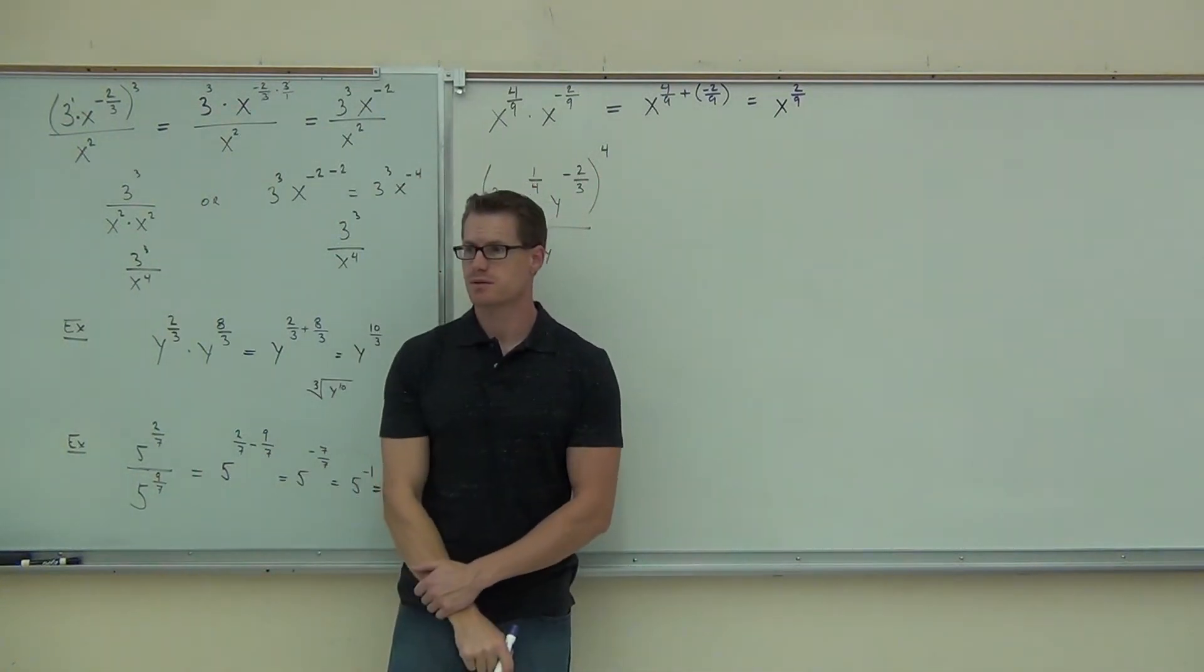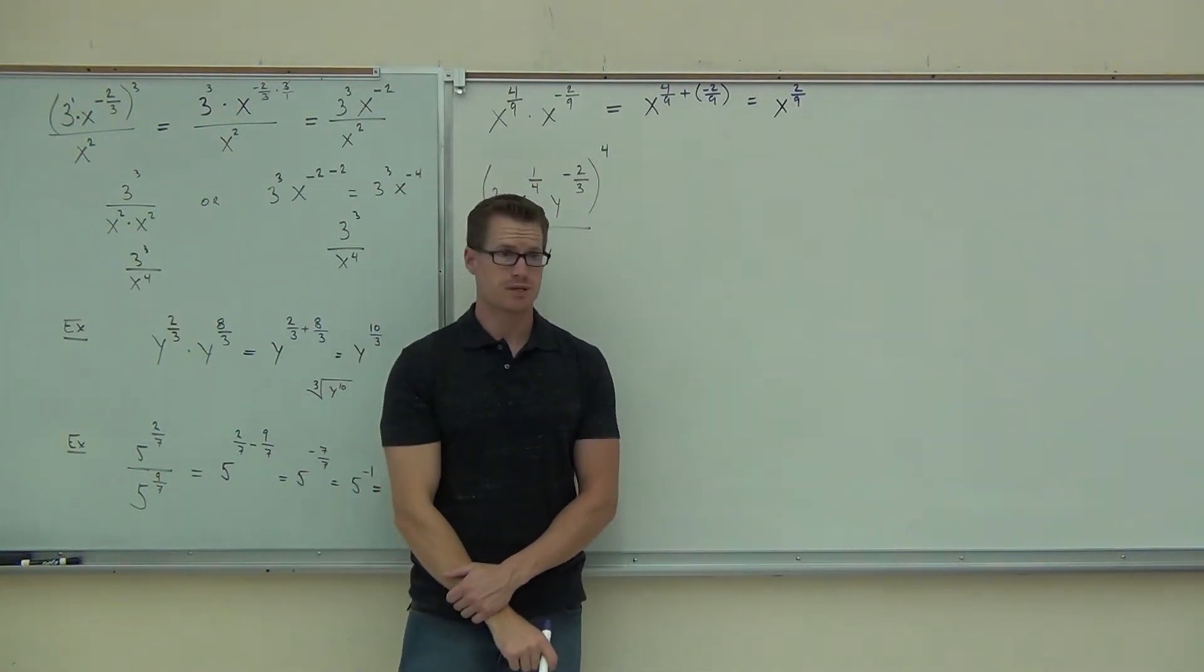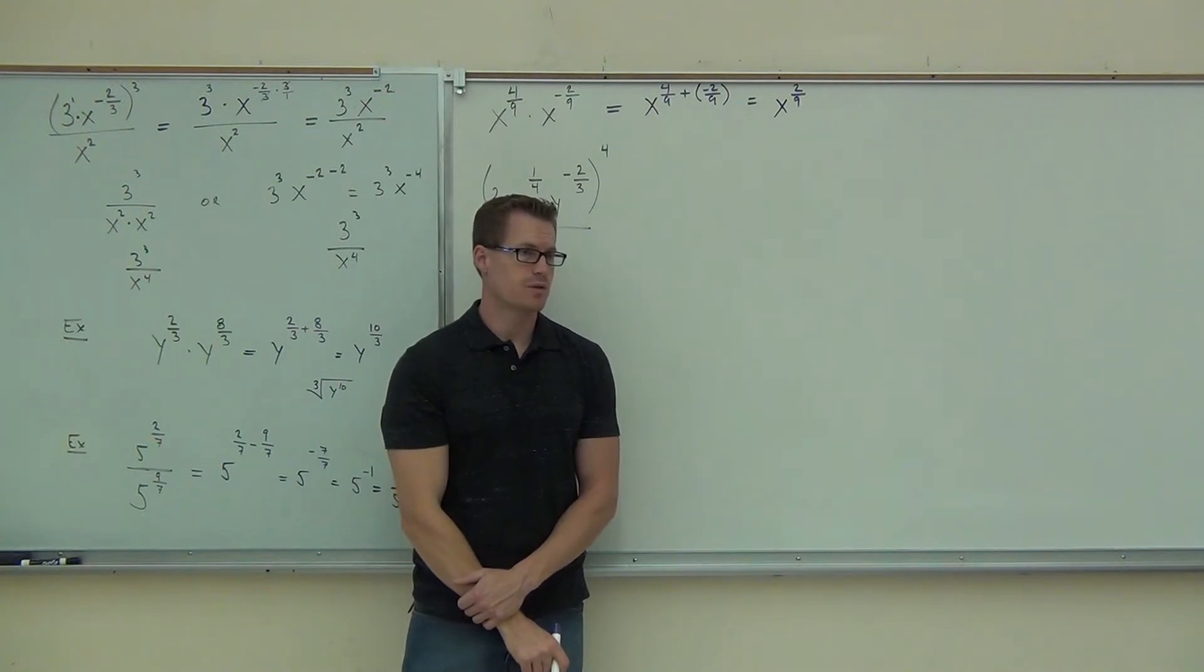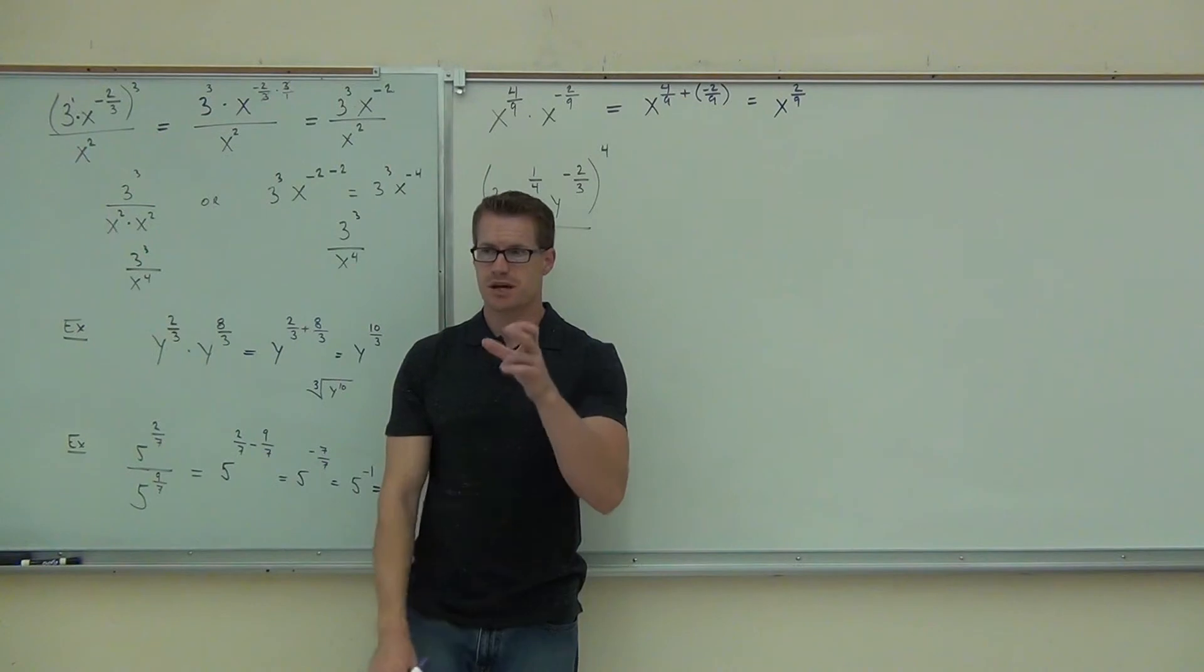Did you get x to the two-ninths? We still add those exponents, however, one's negative. So we know that four-ninths plus negative two-ninths. Addition rule says different signs subtract, take the bigger number, and we get positive two-ninths.